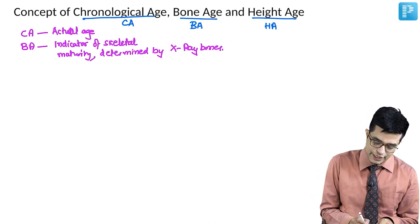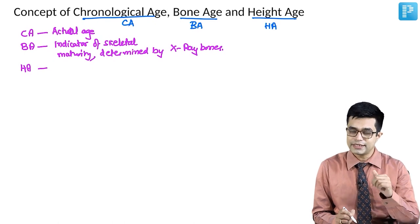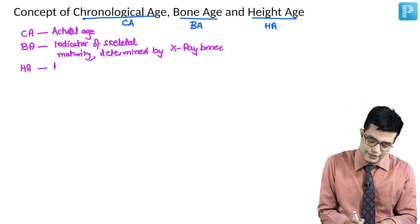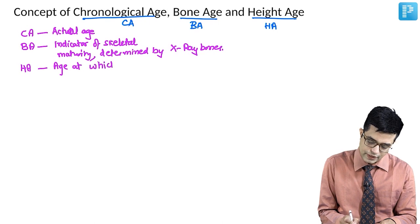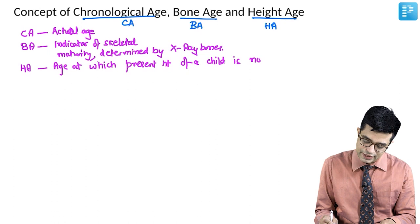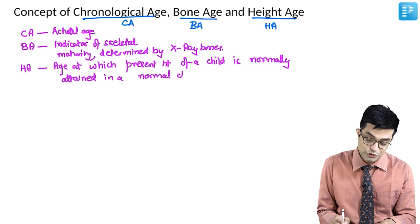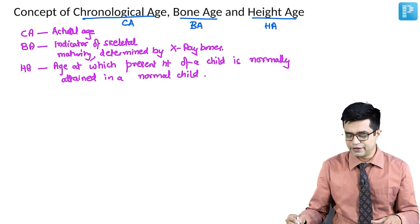The third is height age. Height age is the age at which the present height of a child is normally attained in a normal child. Let me give an example to explain this.